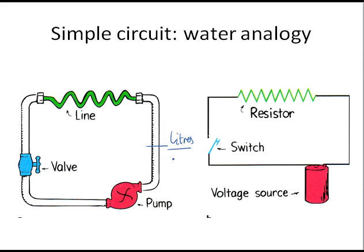Then we would have the rate of water flow in litres per minute. Now in our electric circuit, we have something, of course it can't be us since we can't see the electrons moving.